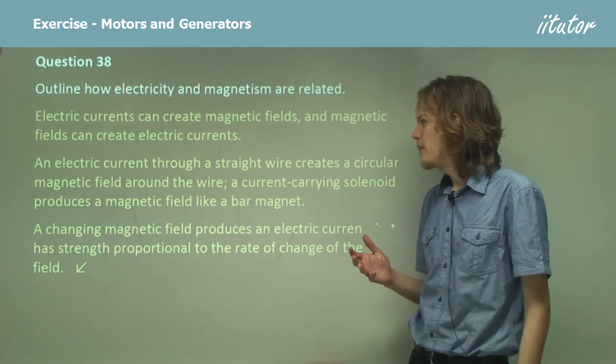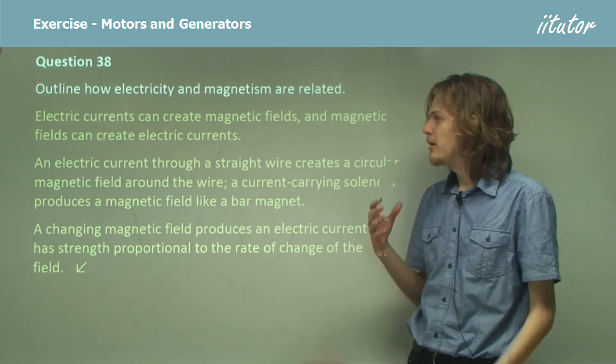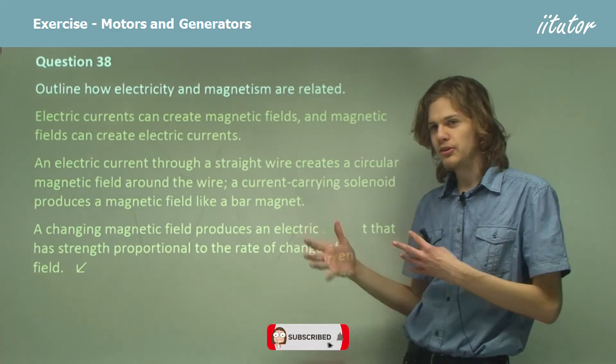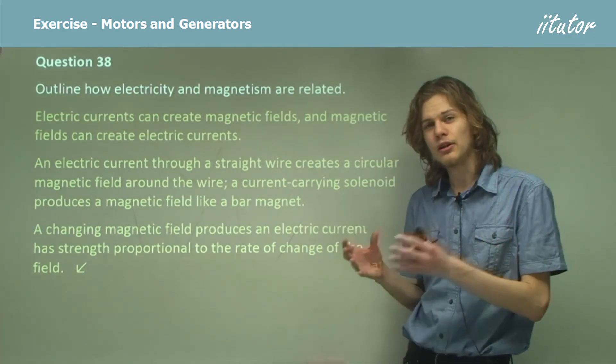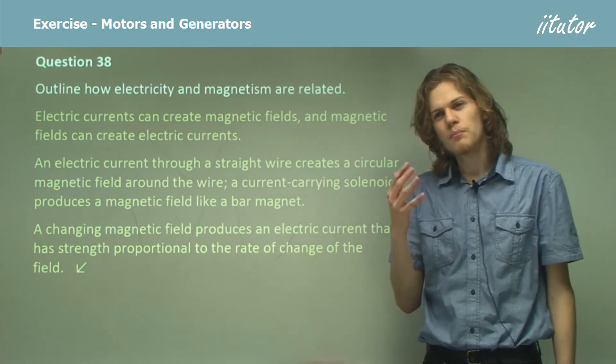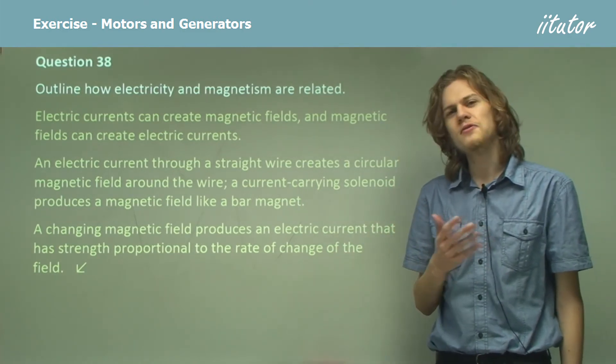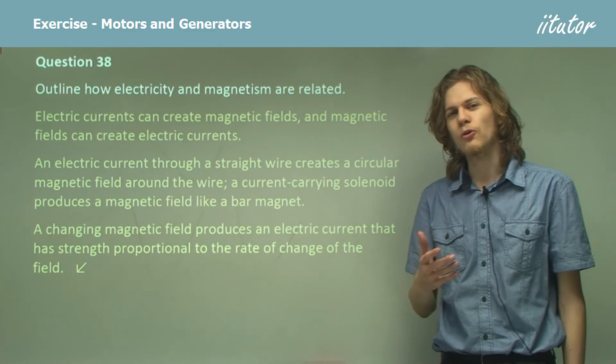You can see from this that we can produce electricity from magnetism and magnetism from electricity. They're both two sides of the same coin and are very closely related.